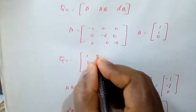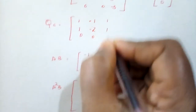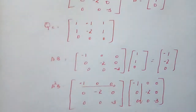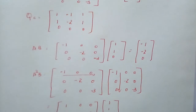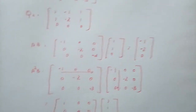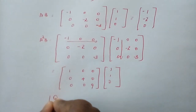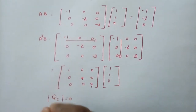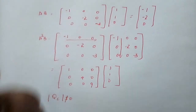So our QC matrix is assembled as: QC = [B | AB | A²B] = [1, -1, 1; 1, -2, 0; 0, 0, 0]. I need to check whether the system is controllable. To do so, I need to find the determinant of this matrix. The condition is: determinant of QC not equal to 0 means the system is controllable.